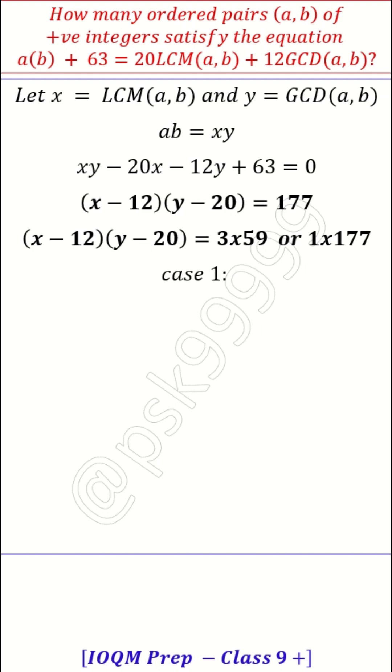There are two cases possible. So let us take case 1. Case 1 is (x - 12)(y - 20) = 3 × 59. So x - 12 = 59, then x is 71 in that case and y - 20 = 3, in that case y is 23. But you remember, you cross check these values are okay or not.